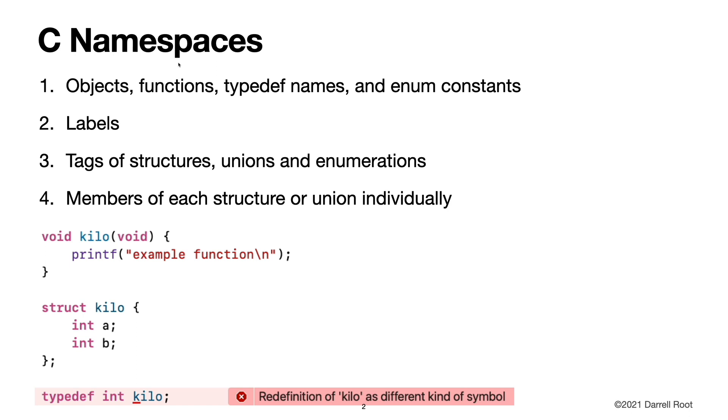C has four namespaces. It has a namespace for objects, functions, typedef names, and enum constants. It has a namespace for labels. It has a separate namespace for tags of structures, unions, and enumerations. And each structure or union individually has its own namespace of its own members.